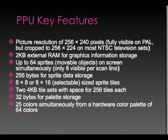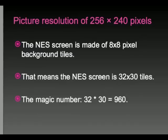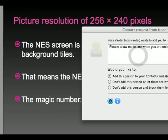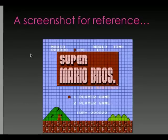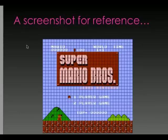Let's look at this part by part. The picture resolution is 256 by 240 pixels, and the screen is made up of 8 by 8 pixel background tiles. That means with a resolution of 256 by 240 divided into 8 by 8 tiles, the screen is made of 32 by 30 tiles — 960 total. If you've played Mario Bros. before, you'll recognize this title screen: it's 32 tiles wide and 30 tiles high, for a total of 960 tiles on screen at one time, each being 8 by 8 pixels.